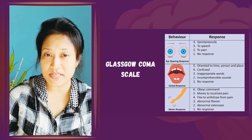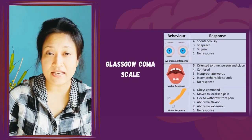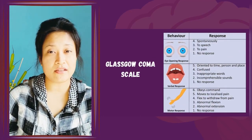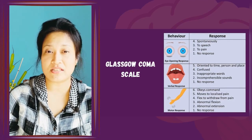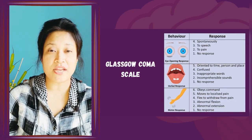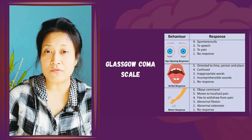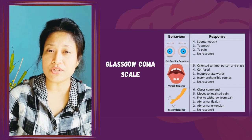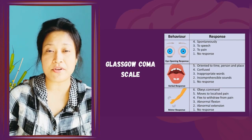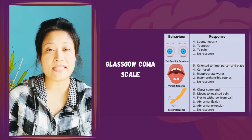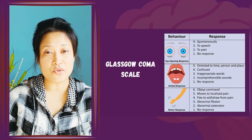The Glasgow Coma Scale is a widely used tool to identify the level of consciousness. Various grades of eye opening, verbal, and motor response can be recorded on the scale to provide standardized results with minimum errors.